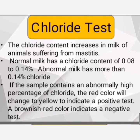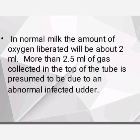Now let's discuss the chloride test. The chloride content increases in milk of animals suffering from mastitis. Normal milk has a chloride content of 0.08 to 0.14%, and abnormal milk has more than 0.14% chloride. If the sample contains an abnormally high percentage of chloride, the red color will change to yellow to indicate a positive test. A brownish-red color indicates a negative test. For normal milk, the amount of oxygen liberated will be about 2 ml, and more than 2.5 ml of gas collected at the top of the tube is presumed to indicate an abnormal infected udder.